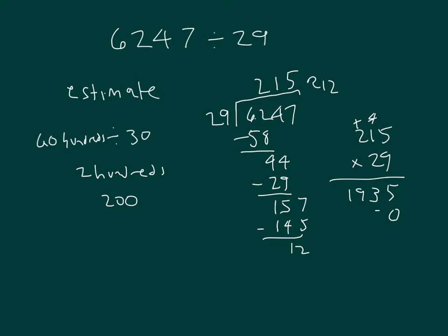Two times five is ten — zero, regroup of one. Two times one is two, plus one is three. And two times two is four. Add those together. We get six thousand two hundred thirty-five. And we add in the remainder of twelve — we get six thousand two hundred forty-seven.